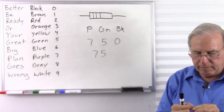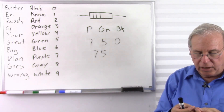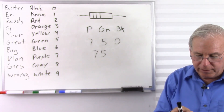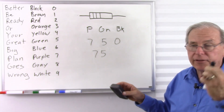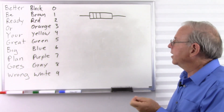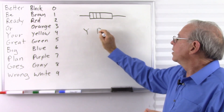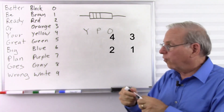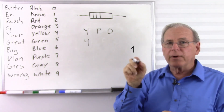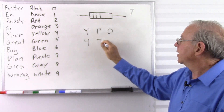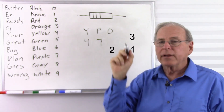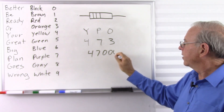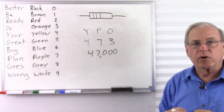Here we have yellow, purple, orange — similar to one we just did but another common one. Yellow: Be Ready Or Your — four. Purple: Be Ready Or Your Great Big Plan — seven. And orange: Be Ready Or — three. So that's four, seven, and three zeros — 47,000 ohms, or 47K.